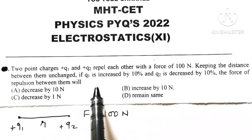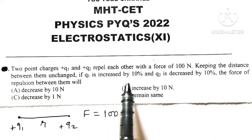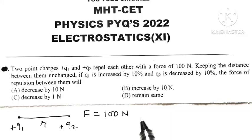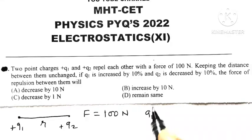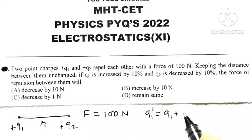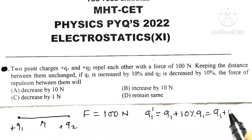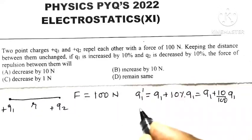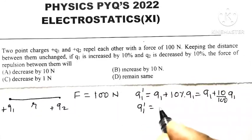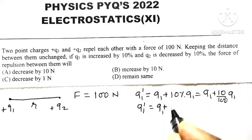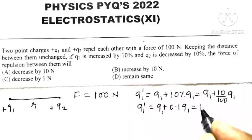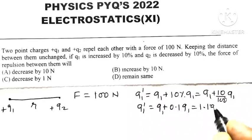Now see what happens if Q1 is increased by 10%. The new Q1 dash is equal to original Q1 plus 10% of its original value, which is Q1 plus 0.1 Q1, or Q1 dash equals 1.1 Q1.